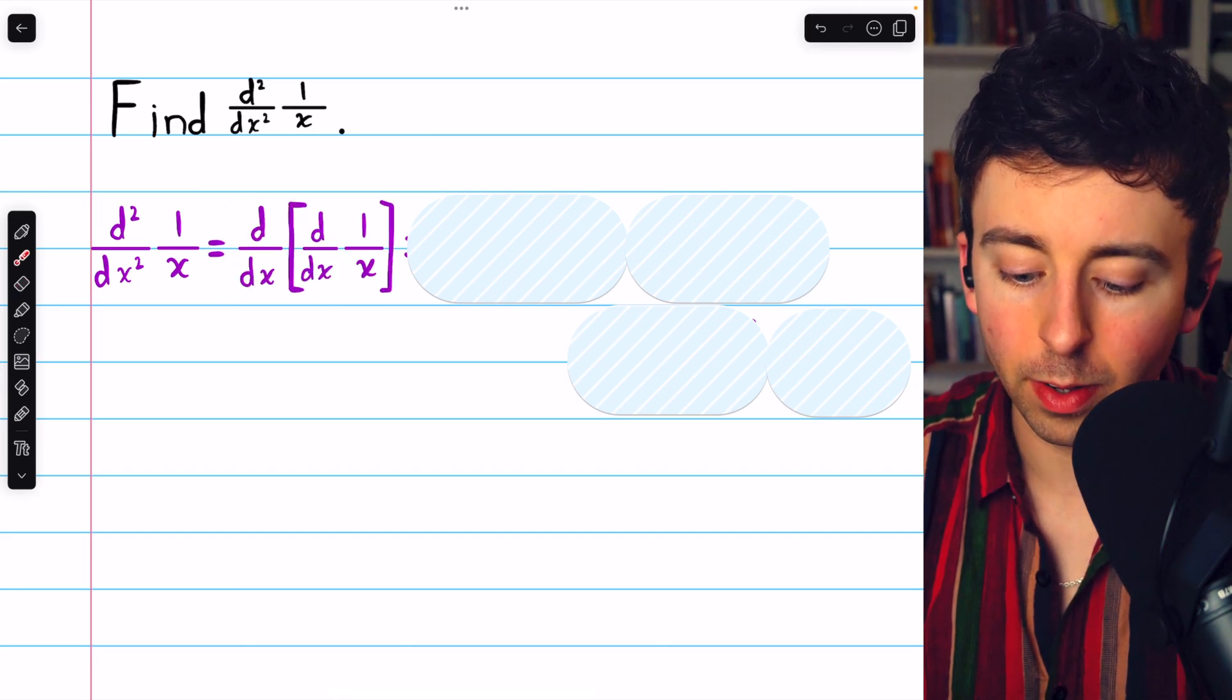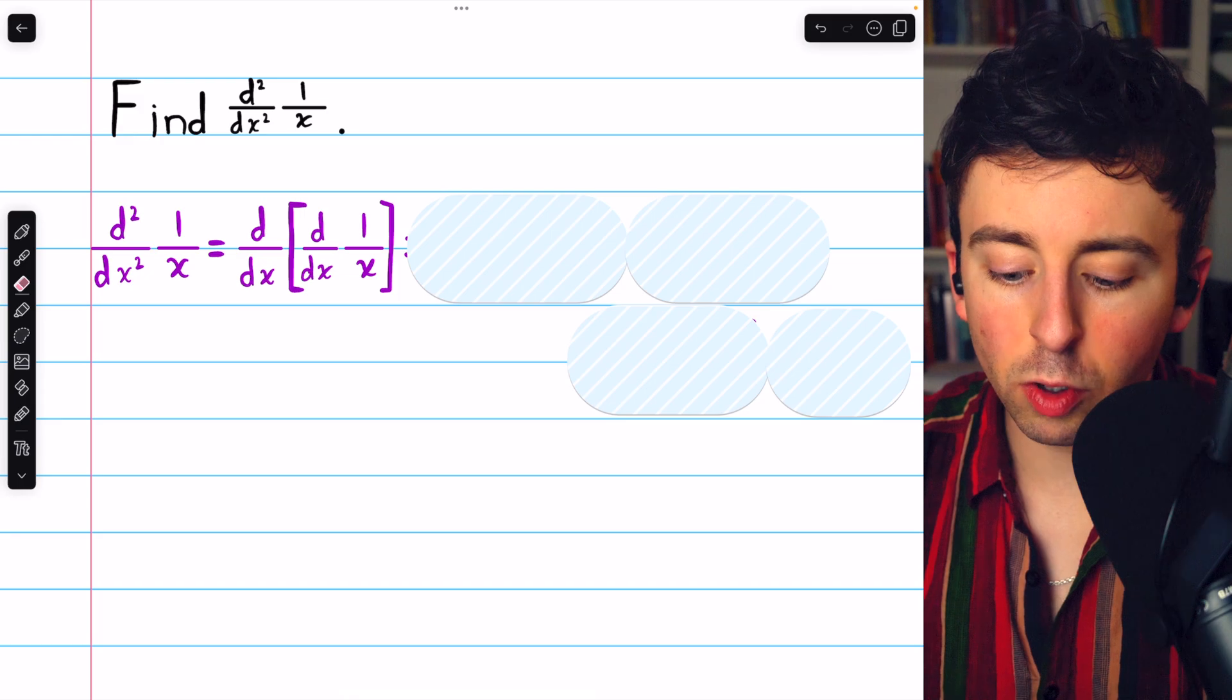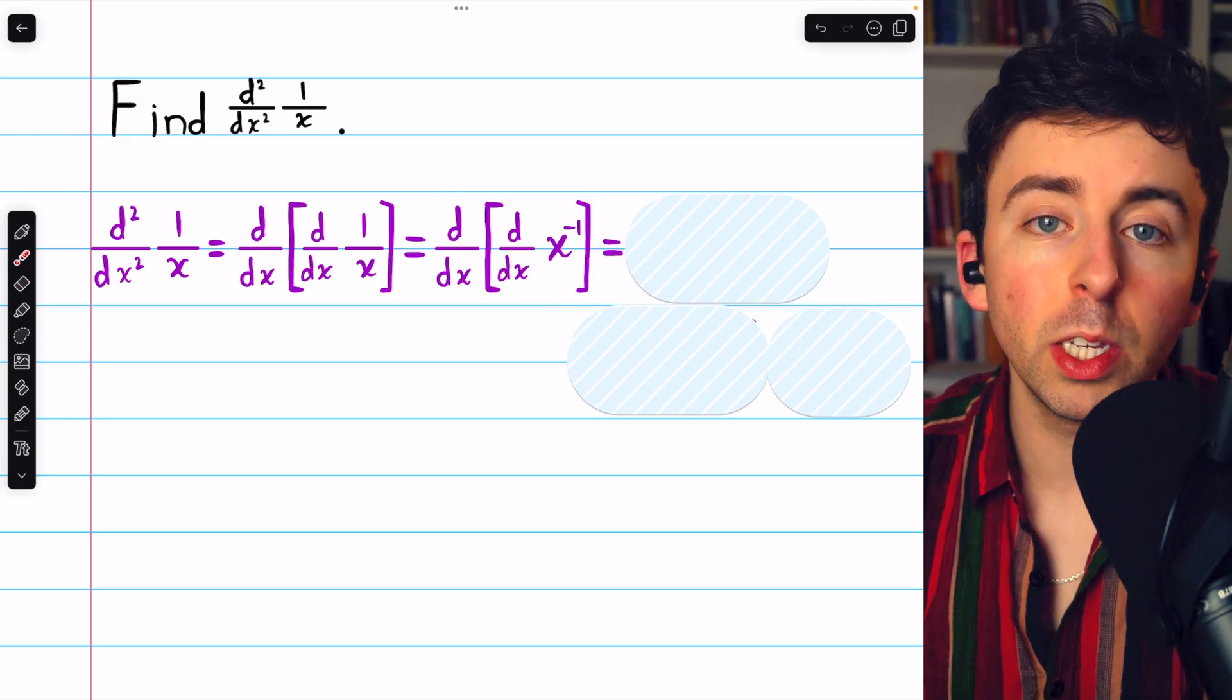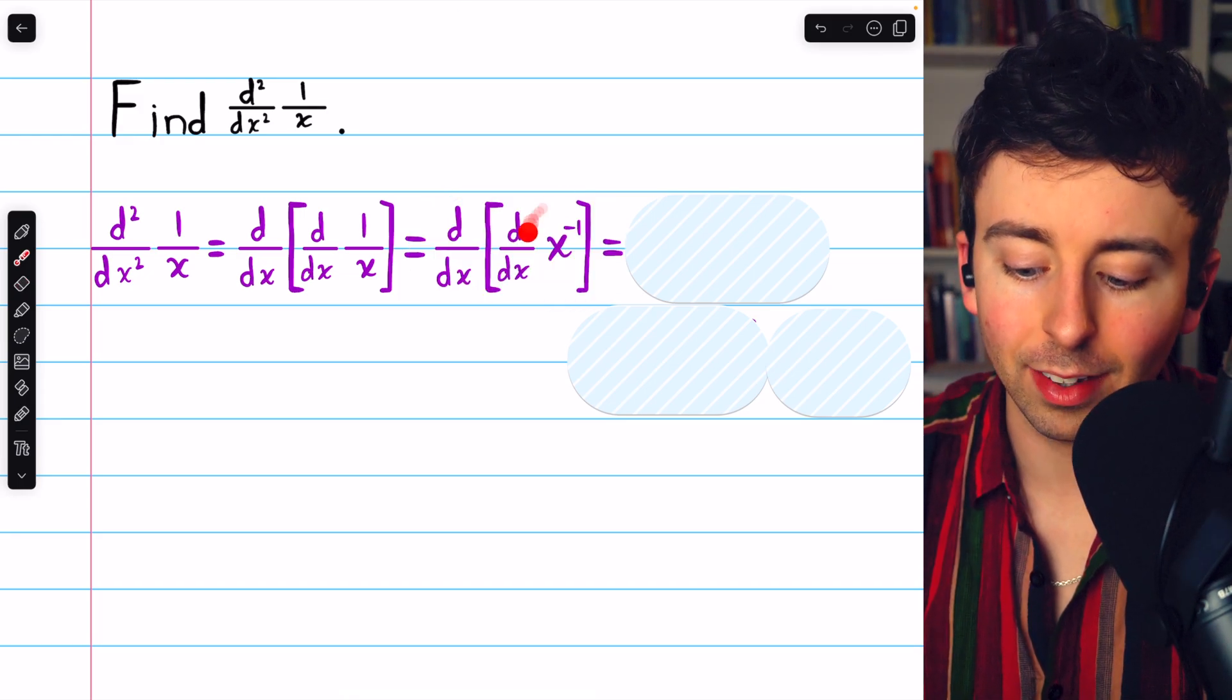So, the derivative of the derivative. Then, we should rewrite 1 over x as a power. Hopefully you know, 1 over x is the same as x to the negative 1.